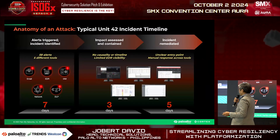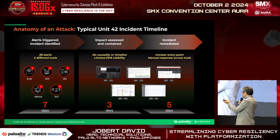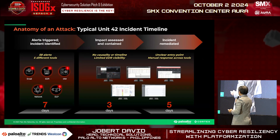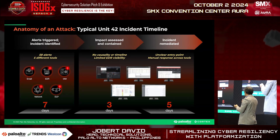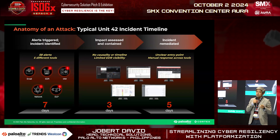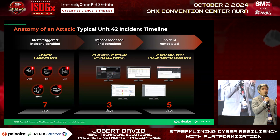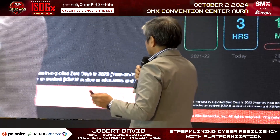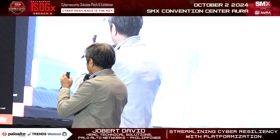Let's look at the anatomy of an attack. Based on what Unit 42 has found, detecting and implementing a response takes about seven days. Impact assessment and containment takes about three days. Remediation takes about another five days. In total, it's about 15 days to stop an attack — meaning two weeks of no business, two weeks of impact from that particular attack. Speed matters, and these are the statistics we've seen so far.